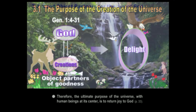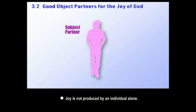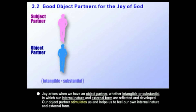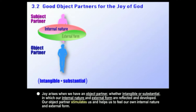So how is joy produced? Joy is not produced by an individual alone. Joy happens when we have a partner — an object partner — someone who can receive, whether that partner is intangible or substantial, whether invisible or someone we can visibly see. Someone in which our internal nature and external form are reflected, when we can see that reflected in someone else. Our object partner gives us a stimulation that helps us feel our own qualities and nature.